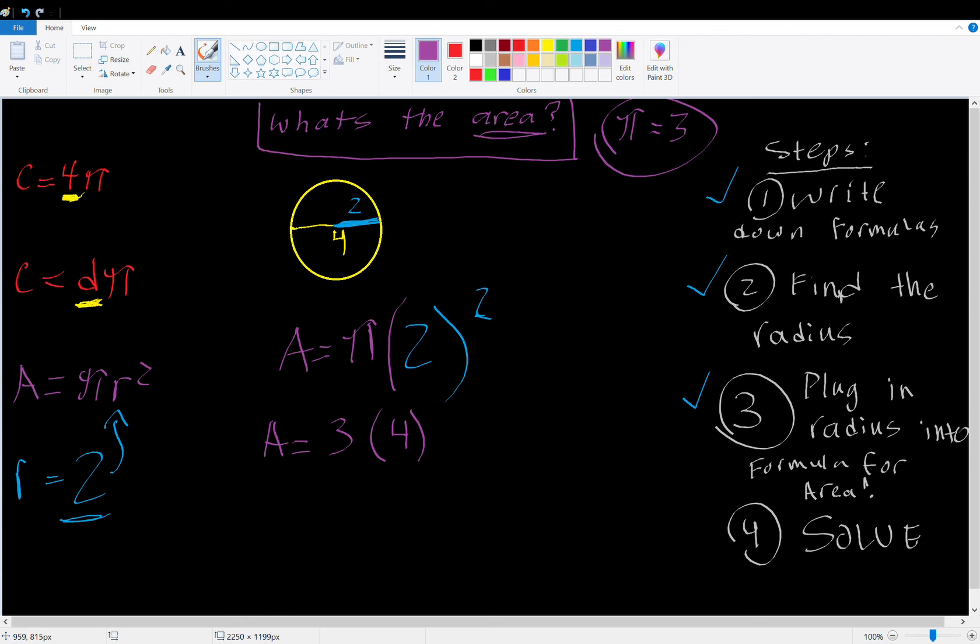So, now we have area is equal to 3 times 4. So, then the area, 3 times 4, what is that going to be? It's going to be 12. Perfect. Now, we found the area. We were able to solve for it. And we found the area of the circle when given the circumference.